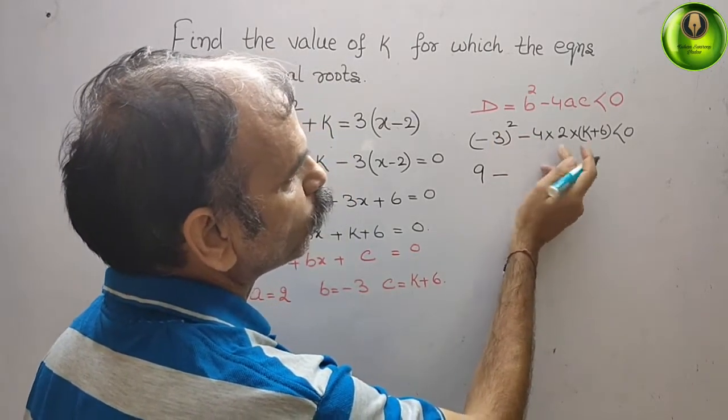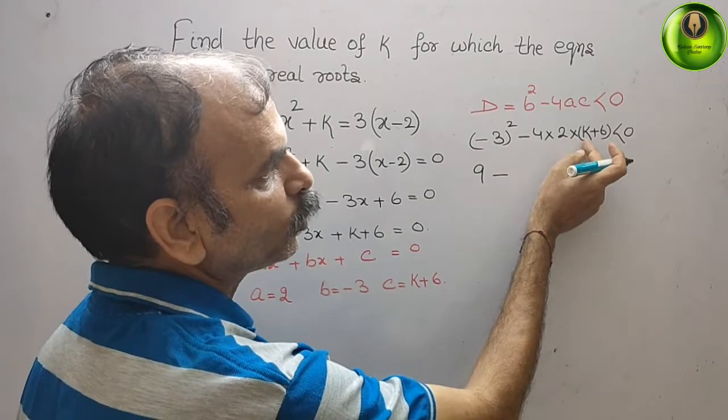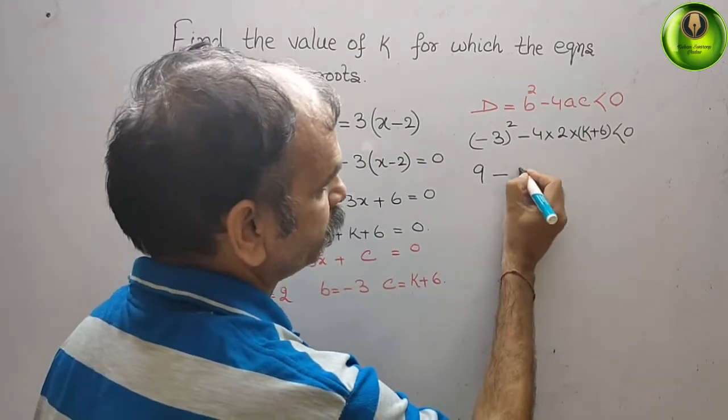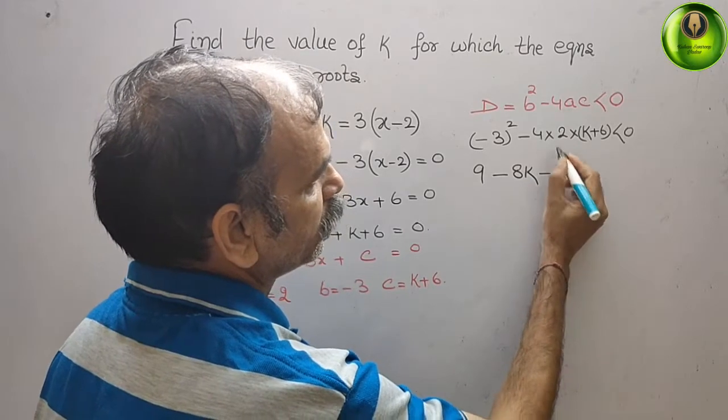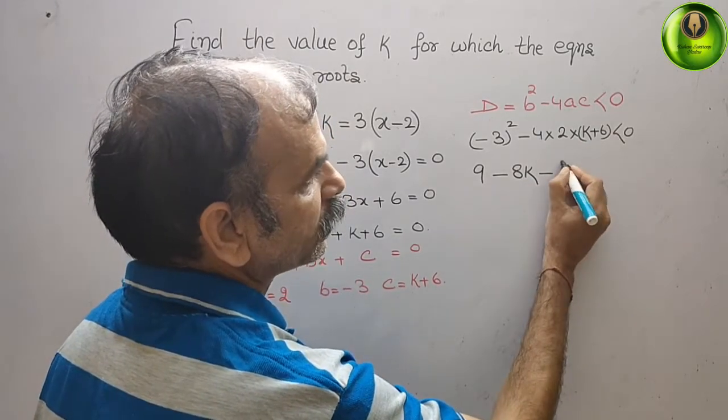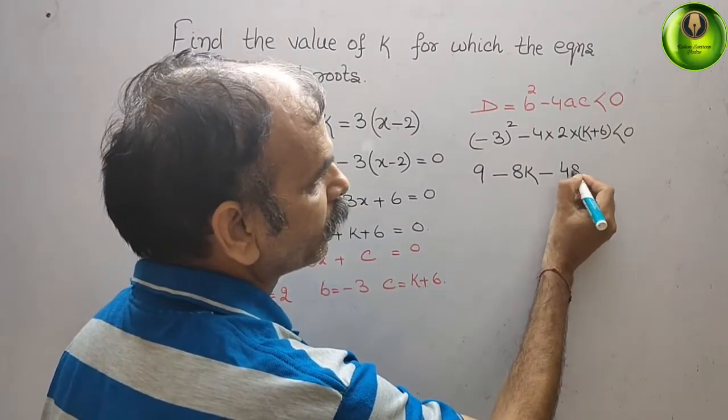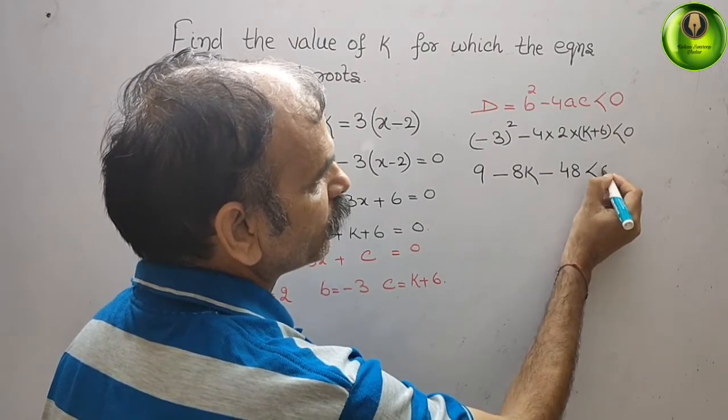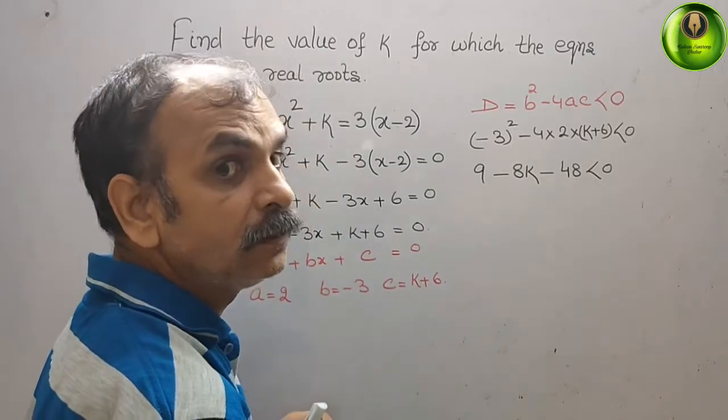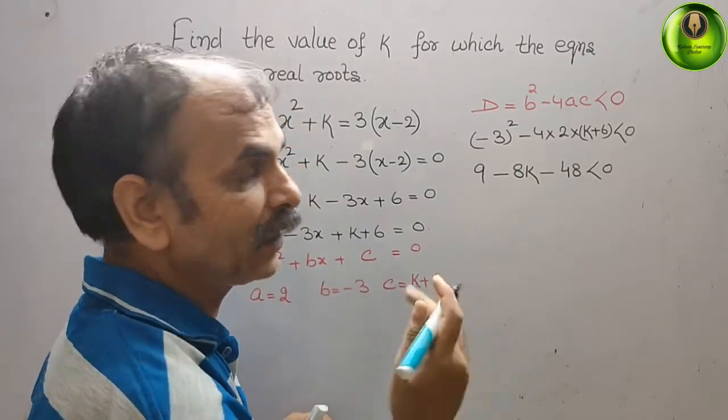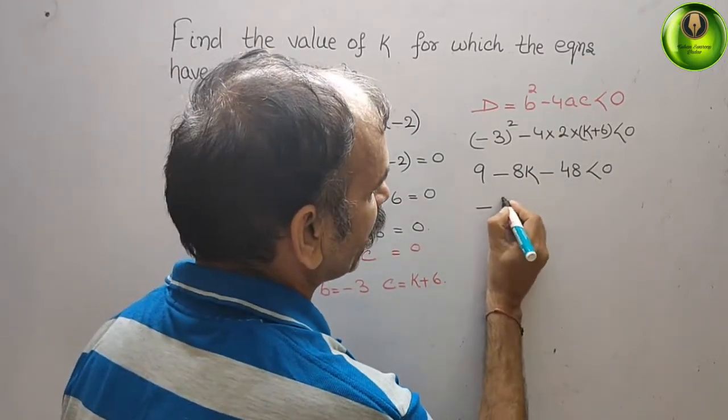4 × 2 is 8, 8 × k is 8k, minus 8 × 6 is 48, so we get 9 - 8k - 48 < 0. This gives us -8k - 39 < 0.